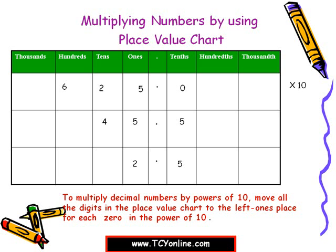Next, let's multiply 45.5 by 100. Multiplying by 100, we move each digit two places to the left. So 4 at tens moves to thousands, 5 at ones moves to hundreds, and 5 at tenths moves to tens. Place zeros at the ones and tenths places, so our answer is 4550.